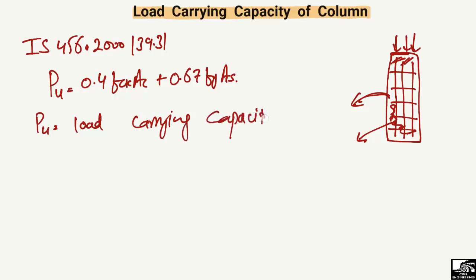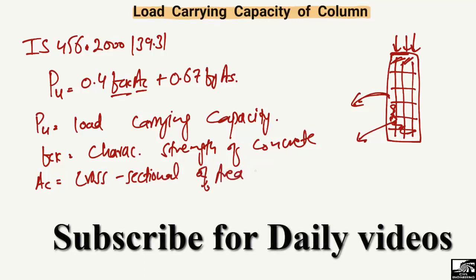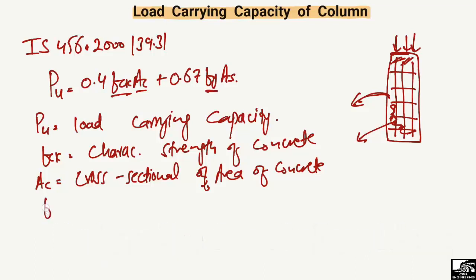FCK is the characteristic strength of concrete. AC is the cross-sectional area of the concrete core — it is the cross-sectional area of concrete, whether it is a circular, rectangular, or square column.